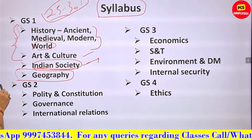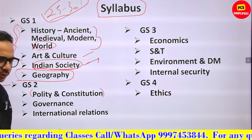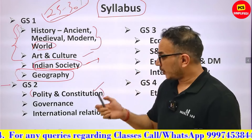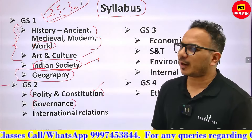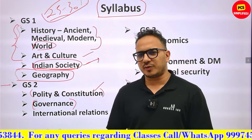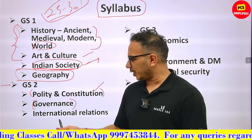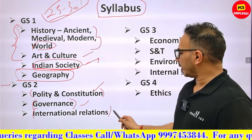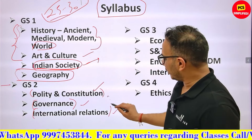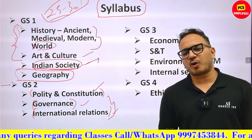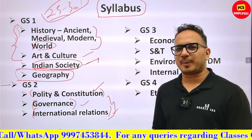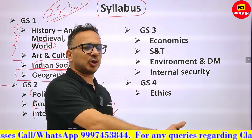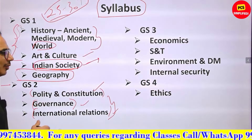GS2 covers polity and constitution — most people are studying that, which should suffice. Governance is a smaller topic: good governance initiatives like citizen's charter, RTI, social audit, etc. The most interesting new topics here are governance and International Relations. When we start classes we'll focus first on new topics, because history, geography, politics, and economics you will already be studying — but some things are generally ignored and we will focus on those first.